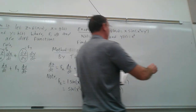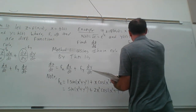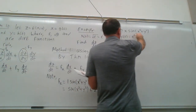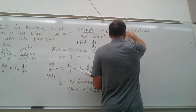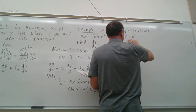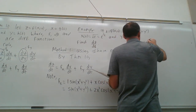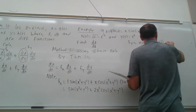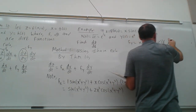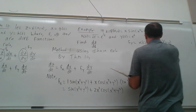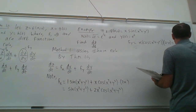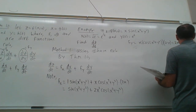Now for f_y: the first term has no y, so no product rule needed. We get x · cos(x² + y²) times the derivative of the inside with respect to y, which is 2y. So f_y = 2xy · cos(x² + y²).